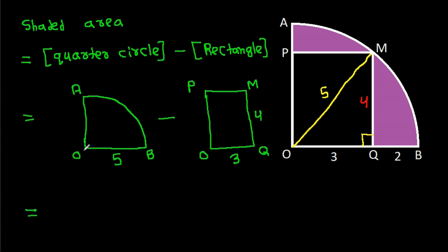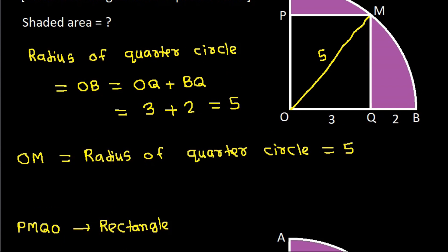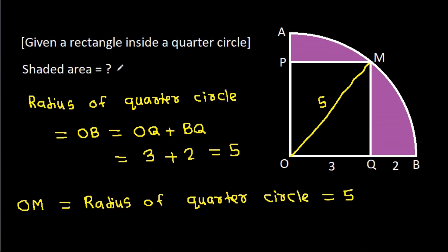Area of quarter circle is π r squared over 4, which equals 25π over 4. Rectangle area is 4 times 3, which equals 12. Therefore, shaded area is 25π over 4 minus 12.